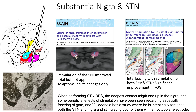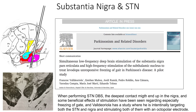When performing STN-DBS, the deepest contact might end up in the substantia nigra, and some beneficial effects of stimulation have been seen regarding especially freezing of gait. Valderiola has a study where he is intentionally targeting both the STN and the nigra, and stimulating both of them with an octopolar electrode using both low and high frequency stimulation simultaneously, with some reported benefits.